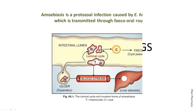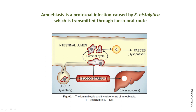Welcome to PKI Pharmacy. Today we are going to learn about anti-amoebic drugs. Amoebiasis is a protozoal infection caused by Entamoeba histolytica and is transmitted through the fecal-oral route. It has two stages of development: cyst and trophozoite. Transmission occurs due to the cyst form present in fecal matter. When contamination occurs in food and water, the amoebic cyst reaches our intestine and transforms into trophozoites, which reside on the surface of the colonic mucosa.